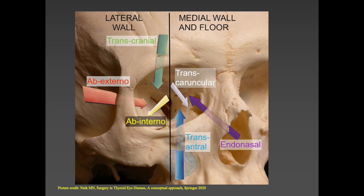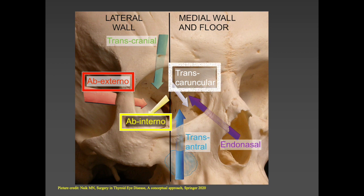When approaching any of the walls or components of the orbit, for the lateral wall you can either use an ab-external approach through the temporal fossa or an ab-internal approach through an eyelid crease or lateral canthotomy incision. To reach the floor, medial wall, or medial part of the orbit, the approach could be transcaruncular, transconjunctival through a transoral route, or even endonasal. A transcranial approach is used rarely but may sometimes be required.